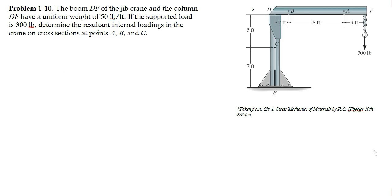Hello everyone. In this video tutorial, we would be solving problem 10 from the chapter of Stress in the 10th edition of Mechanics of Materials by R.C. Hibbeler. In problem 10, a zip crane is given and it is required to determine the resultant internal loadings in the crane on the cross-section at points A, B, and C.